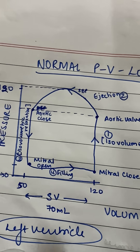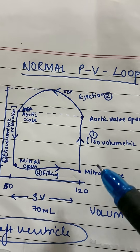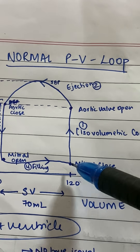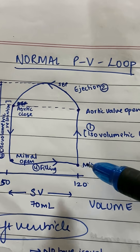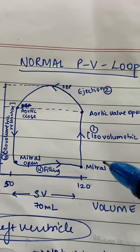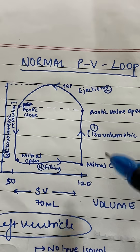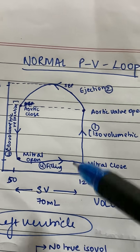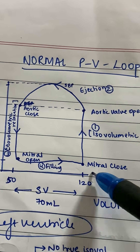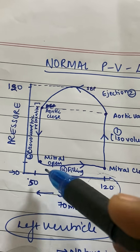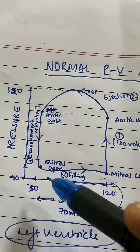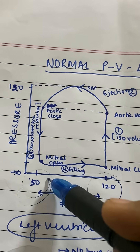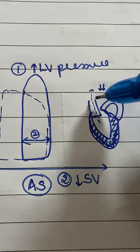The mitral valve closes and this is a closed loop. Stroke volume is the amount of blood ejected from the ventricle — usually around 70 ml. This point is the end-diastolic volume: after the ventricle has been completely filled, this is the amount of blood present. And this one is the end-systolic volume: after ejection, this is the amount of blood left in the ventricle.